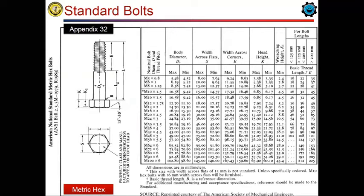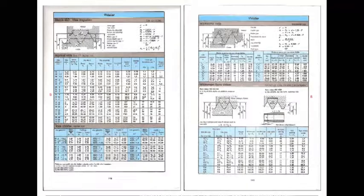In this slide, you will see the metric hexagonal bolt basic dimensions. These are the dimensions within two different dimension ranges, which are the maximum and the minimum.